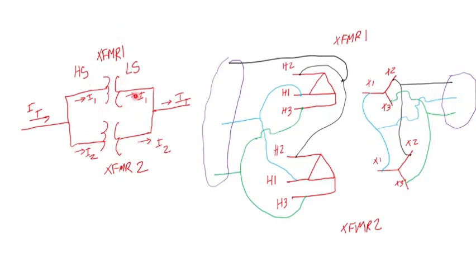You might see this: you have transformer one, transformer two, and you see here there's the high side, low side. You see the high side of each transformer are tied together, low sides are tied together. I'm assuming here per unit, that's why you see the total current coming in.